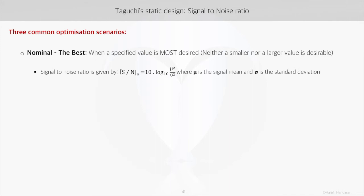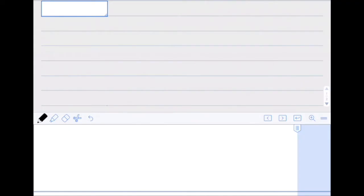This is the formula that you, or a software, will use to find the signal-to-noise ratio in the nominal-the-best scenario. Some of you may be interested to know how this formula is getting derived, so let's quickly have a look at this.